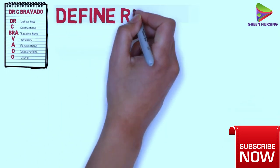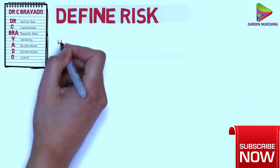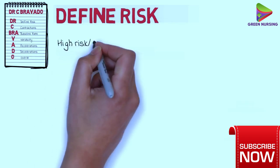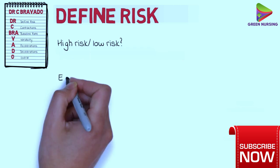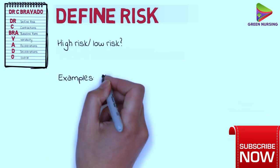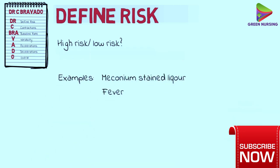Starting off with Define Risk. Here we are assessing the risk factors of the pregnancy — is it a high risk or a low risk pregnancy? Are there risk factors such as meconium-stained liquor, fever, or intrauterine growth restriction, making the pregnancy high risk?